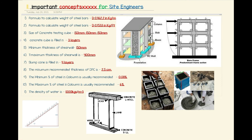At number seven, the slump cone is filled in four layers. The slump test is the most widely used test to find the workability of concrete and is always done on site. When concrete arrives, first check the temperature — it shouldn't exceed 32.5 degrees — then do the slump test, then the compressive strength test. Remember to hammer every layer 20 to 25 times to eliminate air particles.